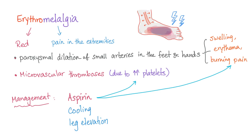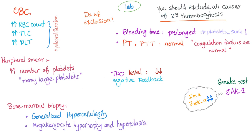Erythromelalgia was discussed in the previous video — it's treatable with aspirin. To diagnose this disease, start with a complete blood count. All cell lines are high, especially platelets — platelets are super high.